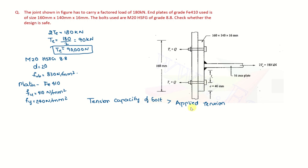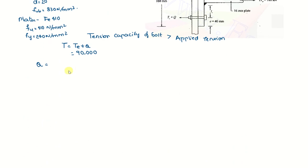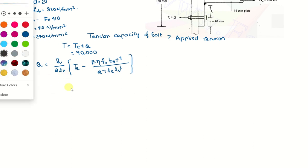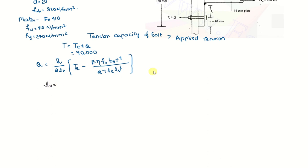So what is applied tension? That is tension T is equal to TE plus Q. TE plus Q. So what is TE? TE is directly 90,000. And Q we need to find out. So from this code book we have the expression for Q as this. Q is equal to LV by 2 times Le into TE minus beta eta F0 Be T power 4 by 27 Le LV squared. So that is what is given. We have to find out all the parameters in order to find it out.